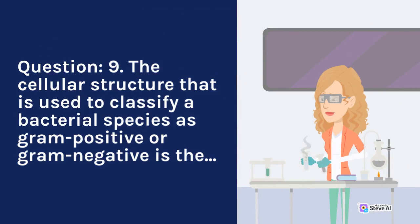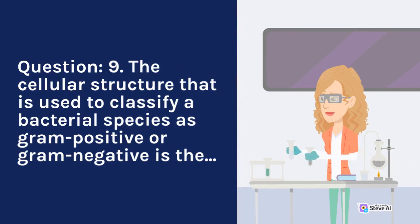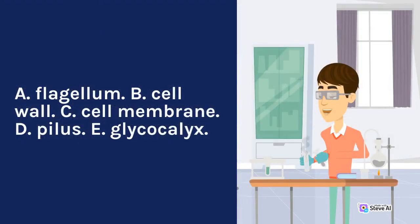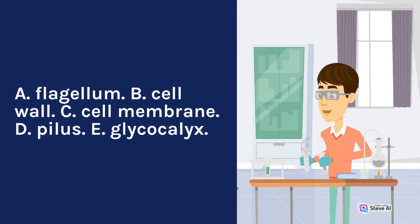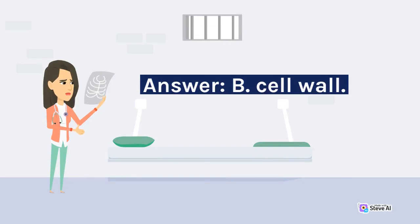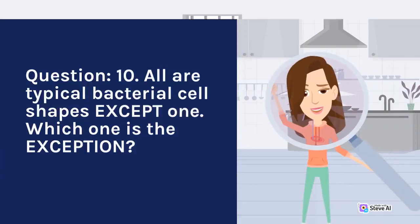Question 9. The cellular structure that is used to classify a bacterial species as gram-positive or gram-negative is the: A. Flagellum. B. Cell wall. C. Cell membrane. D. Pilus. E. Glycocalix. Answer: B. Cell wall.